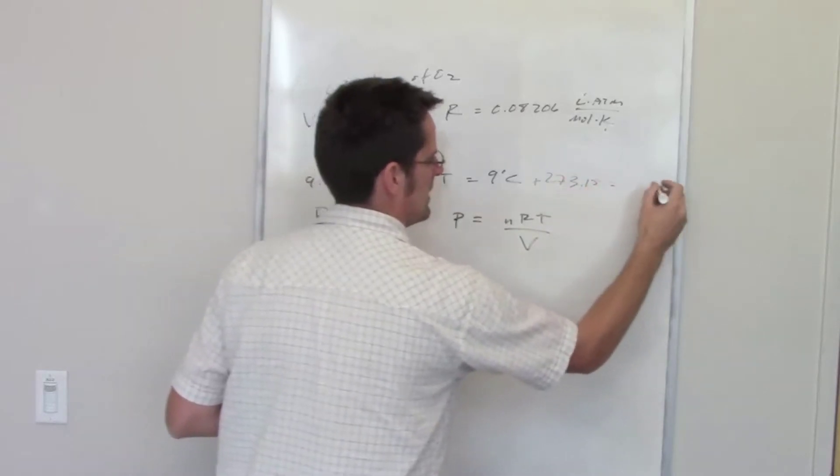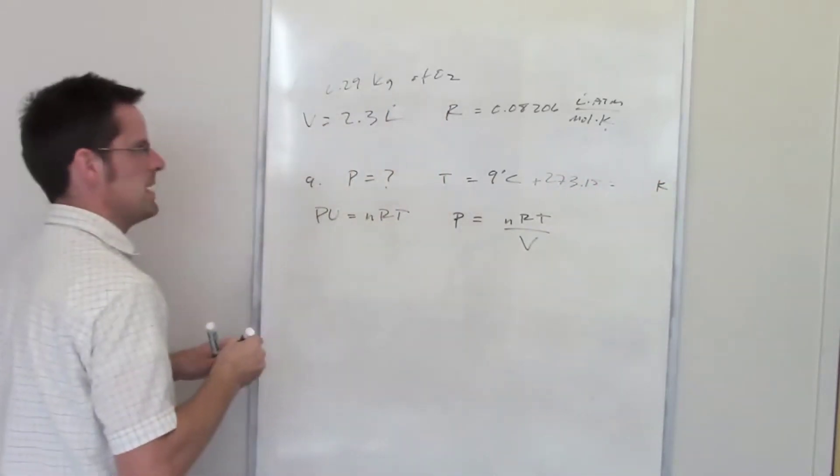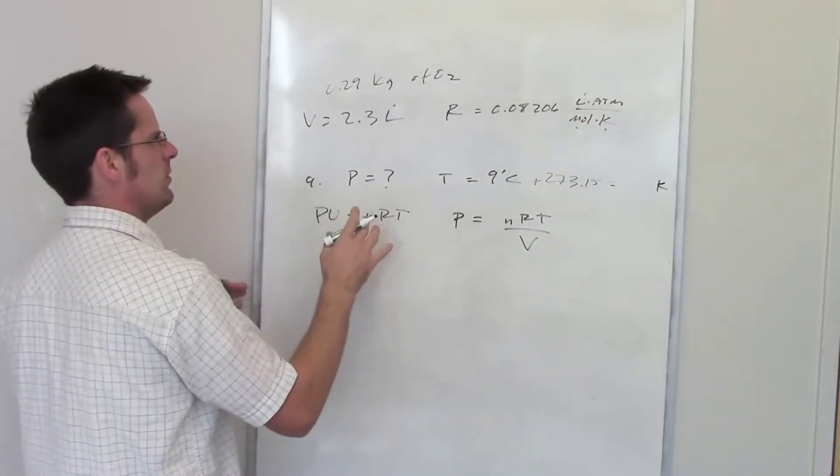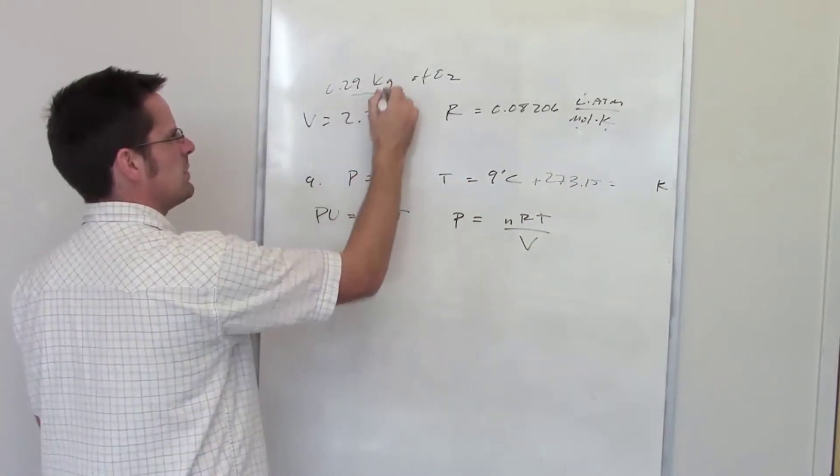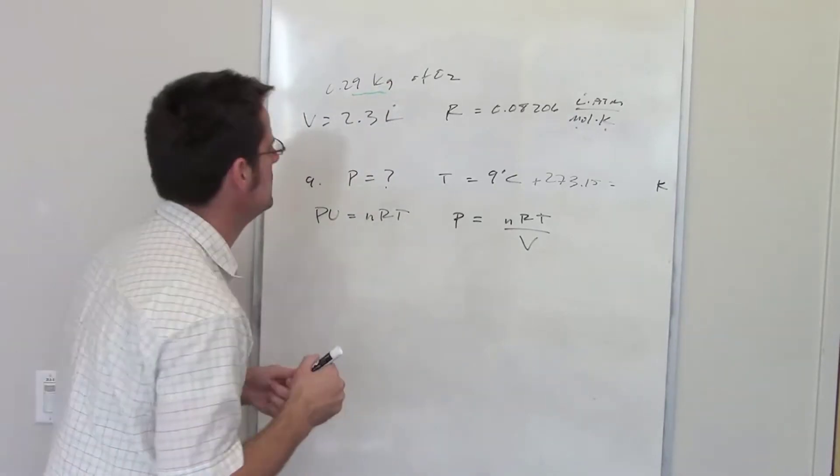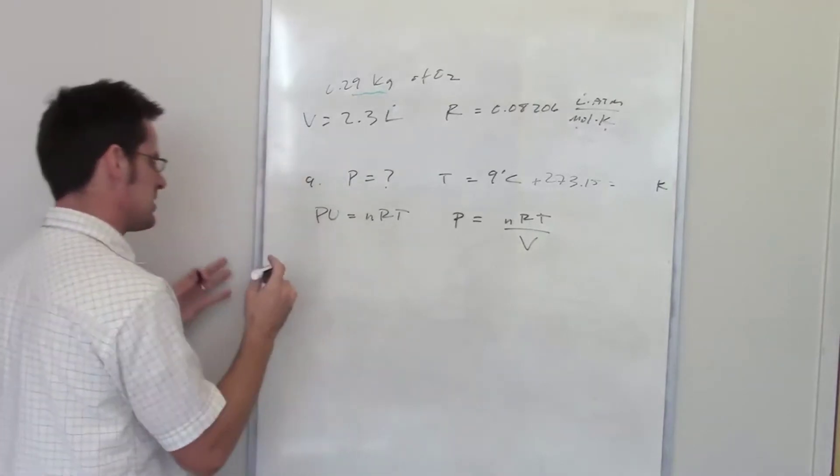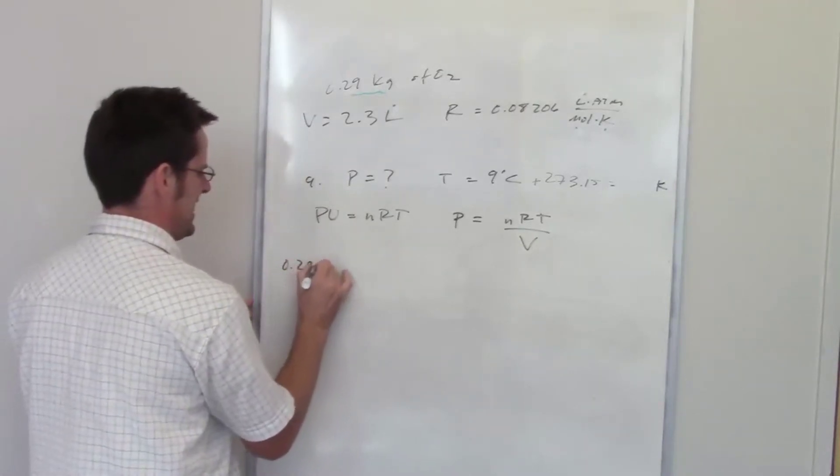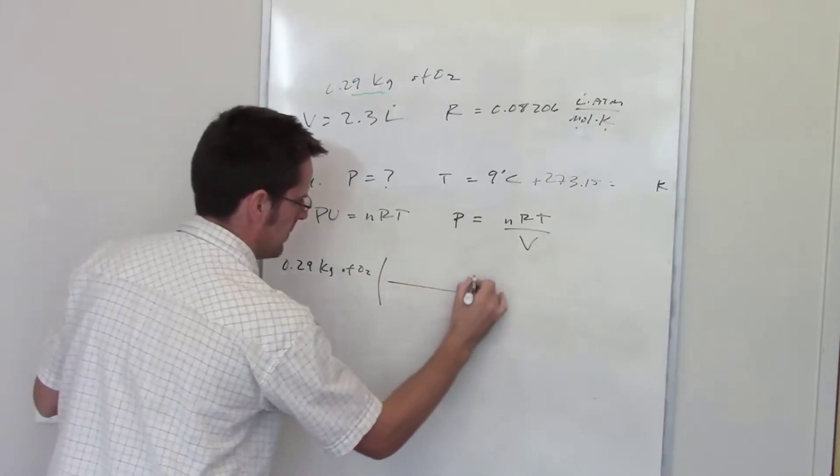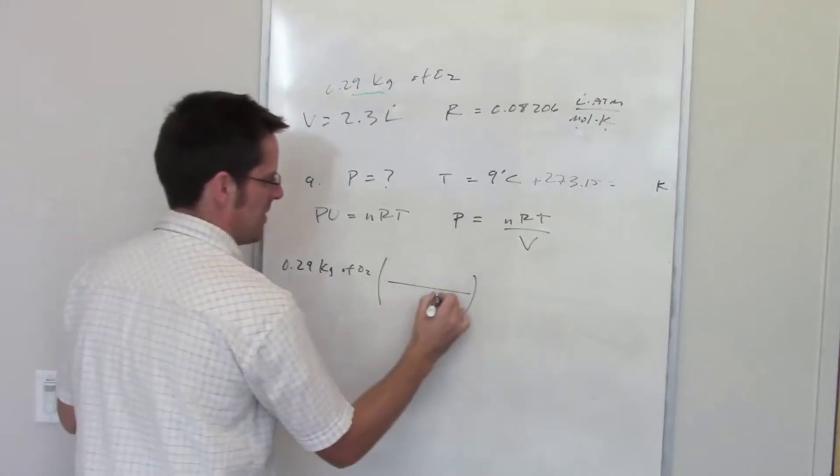Now I've got moles here, but do I have moles anywhere else? No, I've got this crazy thing - kilograms of O2. Can I convert kilograms of O2 into moles of O2? I bet I could probably do that. Let's do some dimensional analysis. I've got 0.29 kilograms of O2.